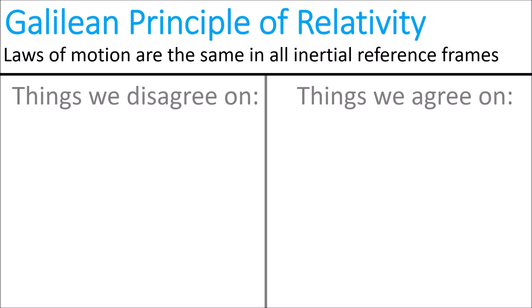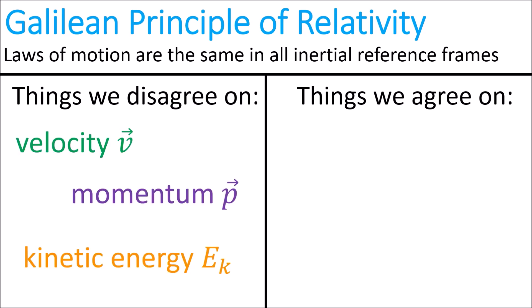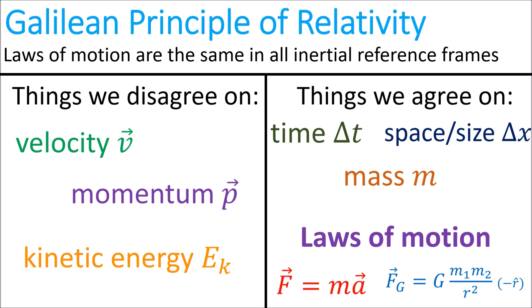In Galilean relativity, different inertial frames will disagree on an object's velocity, momentum, and kinetic energy, but they will agree on time, space and size, and mass, as well as Newton's laws of motion and gravity.